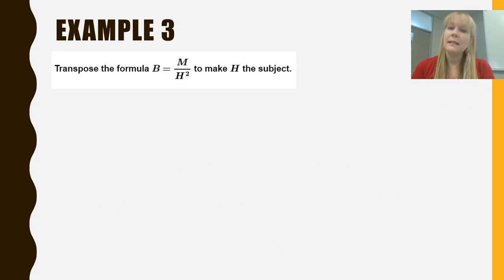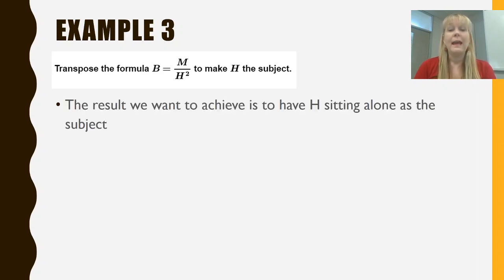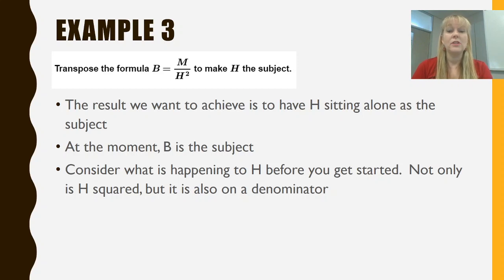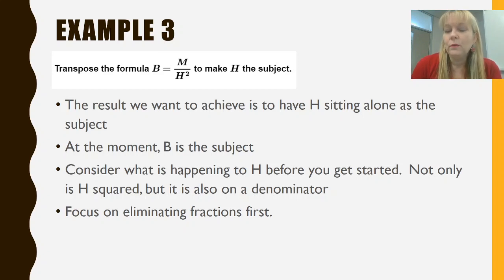My last example today has a little bit more complication in it. Once again, not too many steps, but we've got a squared and we've also got a fraction. And this time, h is not sitting on the numerator. It is on the denominator. We want h all alone. So we're going to have to take a few steps to do this. We've also got b the subject. So let's think about what's happening with h. It's squared and it's also on the denominator, which means we might have to move things around a couple of times to get h all alone. So once again, I'm going to go with my little general rule. I'm going to try and get rid of the fraction sides of things first.